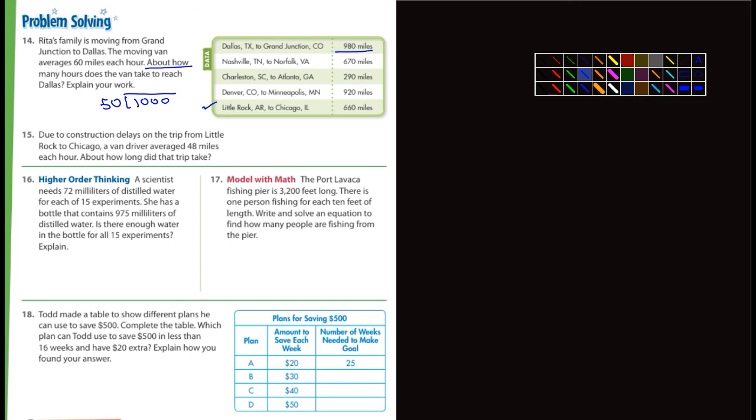Let's see, 15. It says due to construction delays on the trip from Little Rock to Chicago. All right, here's that one, there's Little Rock to Chicago. The van driver averaged 48 miles per hour, and says about, so again we're estimating. About how long did that trip take? So what are we talking about? 660, that's pretty close to 700, so we could call that one 700. And 48 miles an hour is pretty close to 50. How many times does 50 fit into 700? Well, 50 goes into 100 twice, 200 four times, and you just keep adding. So basically 700, twice it'd be 14. So about 14 hours would be my answer, about 14 hours.